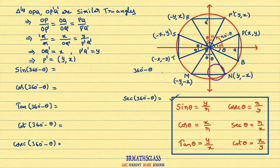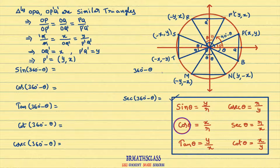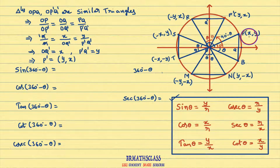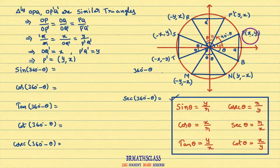Then the six trigonometric functions are defined as follows. Sin theta is defined as the y coordinate of the point divided by the radius of the circle. Cos theta is defined as the x coordinate of the point divided by the radius of the circle. Tan theta is defined as the y coordinate of the point divided by the x coordinate of the point.